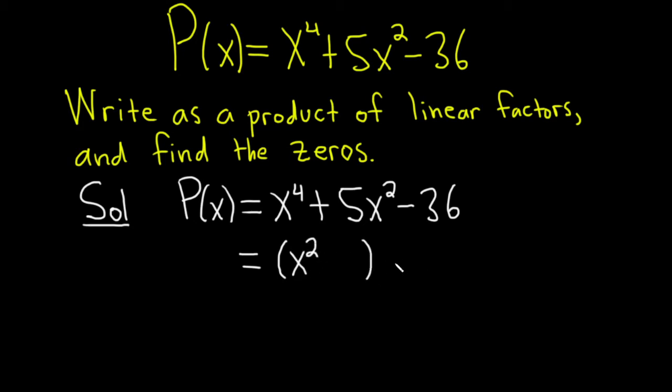x squared, parentheses, x squared, parentheses. Because x squared times x squared is x to the fourth, because we add the exponents when we multiply.